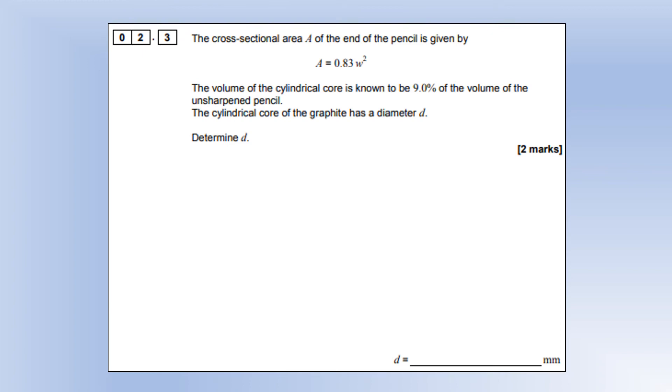The cross-sectional area of the pencil is given by this equation. The volume of the cylindrical core is known to be 9% of the volume of the unsharpened pencil, and the internal graphite has a diameter D, determined D. So first of all, I calculated what the cross-sectional area is using the mean value of W, and that's in millimeter squared.